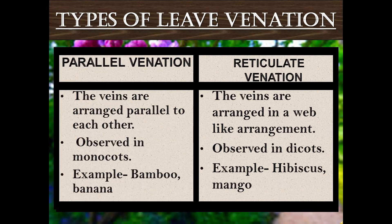There are two types of leaf venation: parallel venation and reticulate venation. In parallel venation, the veins are arranged parallel to each other, and they are observed in monocots. Examples are bamboo and banana. In reticulate venation, the veins are arranged in a web-like arrangement, and they are observed in dicots. Examples are hibiscus and mango.